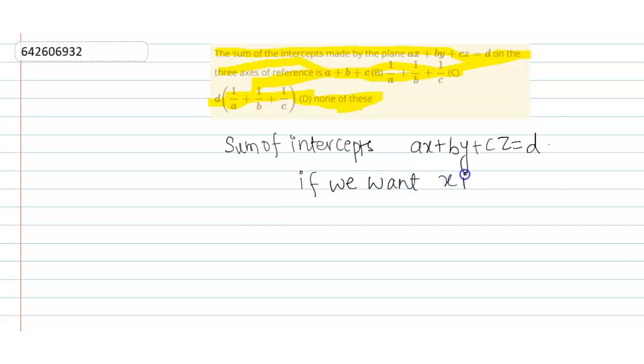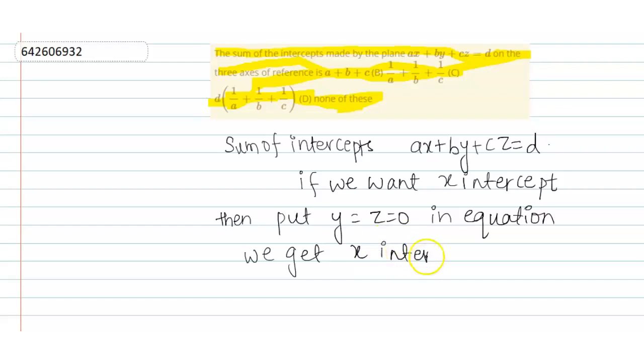then put y equals z equals 0 in the equation. We get x-intercept is equal to D by A.